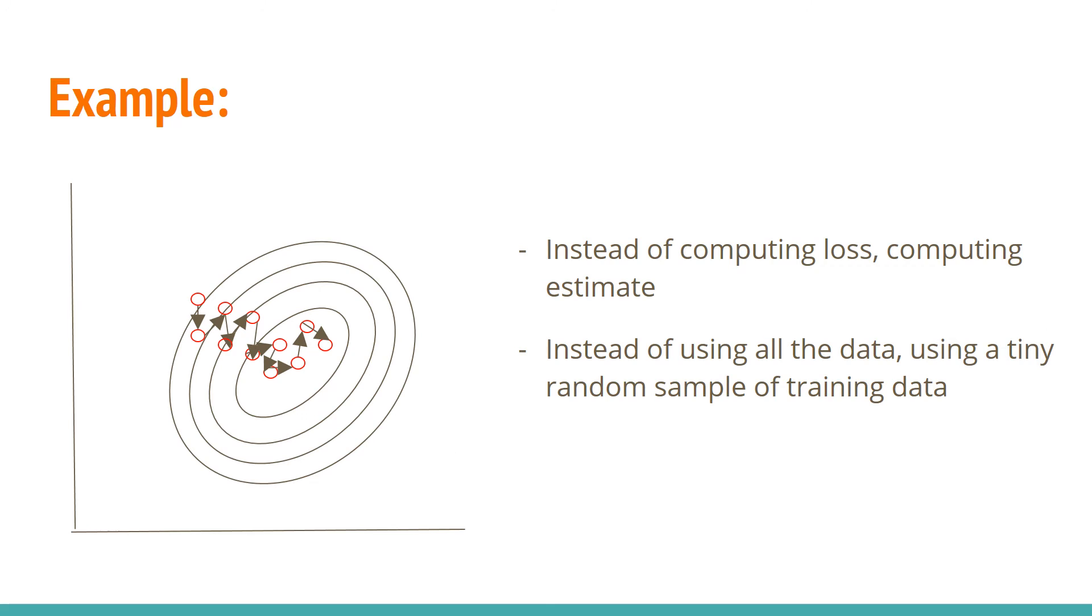If you look at this example, instead of computing loss, it's computing estimate, and instead of using all the data, it's using tiny random samples of training data. As Anu said, picking random samples is very important. If it's not random enough, then it's not going to work. Taking very small steps each time is cheaper to compute. As we saw in the example in the previous slide, it is going towards the global minimum. It may lead to the wrong direction at times, but towards the end, it will always surround the global minimum point.